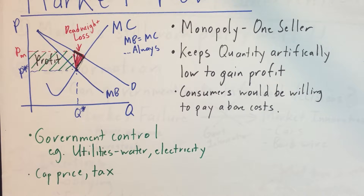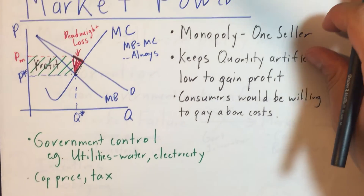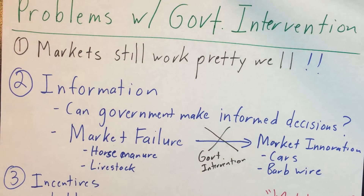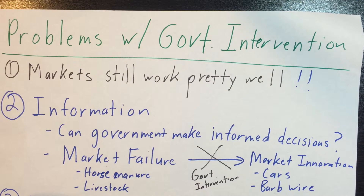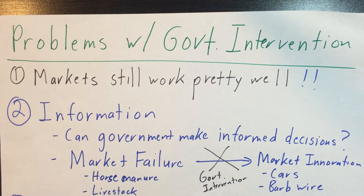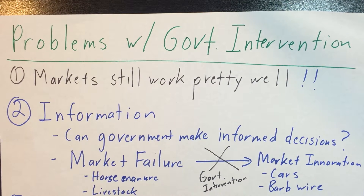Now let's explore why government intervention might not be such a good thing. First, markets still allocate goods pretty well as long as goods are excludable and rivalrous, externalities are few, and the market is competitive. That's generally the situation we face most of the time, so markets are still going to work pretty well in the majority of cases.